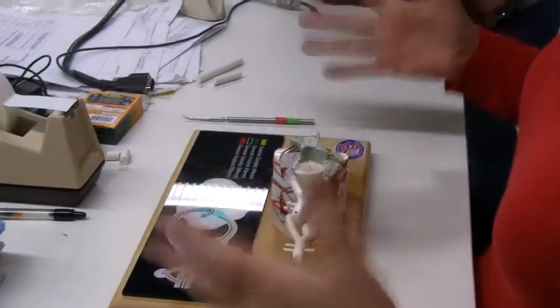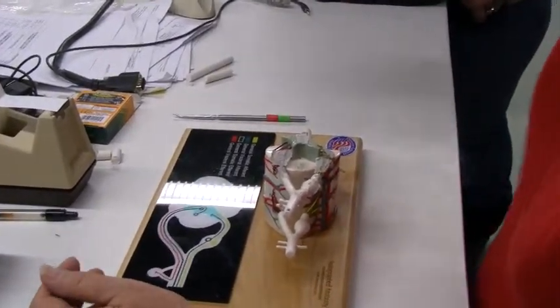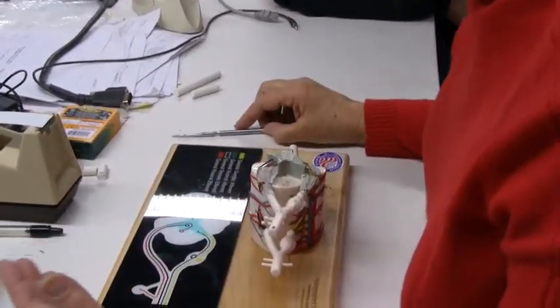So that's the corticobulbar. Think bulb. Now the corticospinal, though, they're coming down and they're going to go down to take care of our muscles in the lower part of that body. Skeletal muscles in the lower part. Voluntary motion in the lower part of the body.